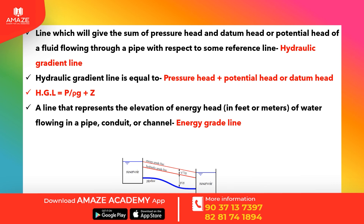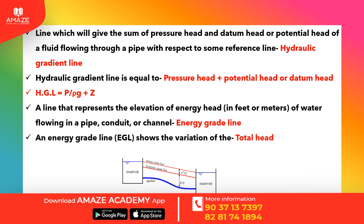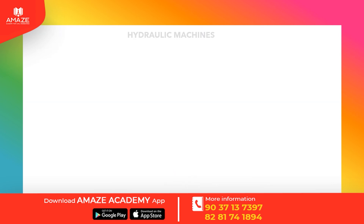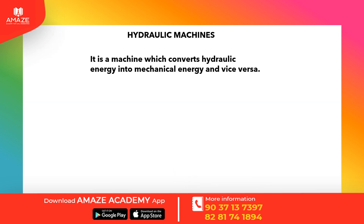The energy grade line shows the variation of the total head. The energy grade line is also known as the total energy line. Hydraulic machines: a machine which converts hydraulic energy into mechanical energy and vice versa.